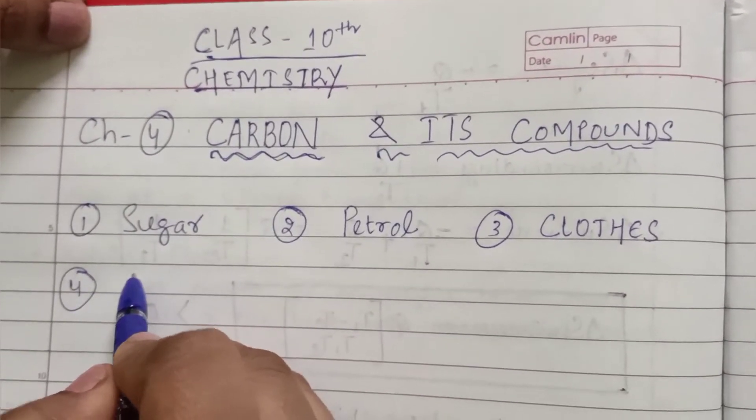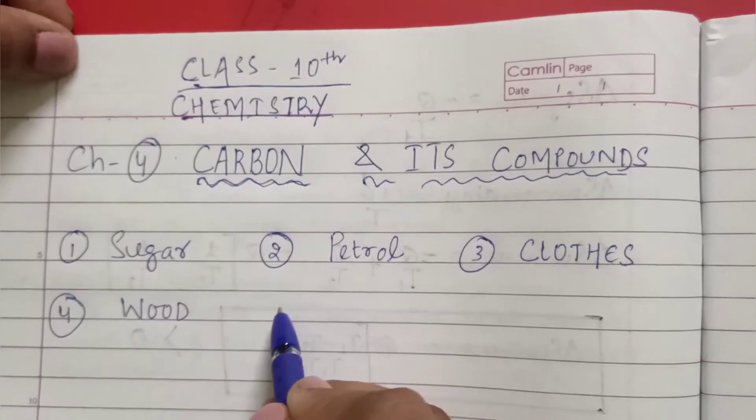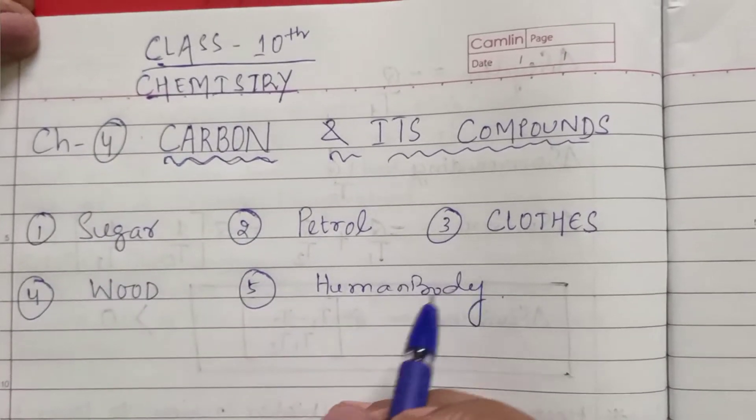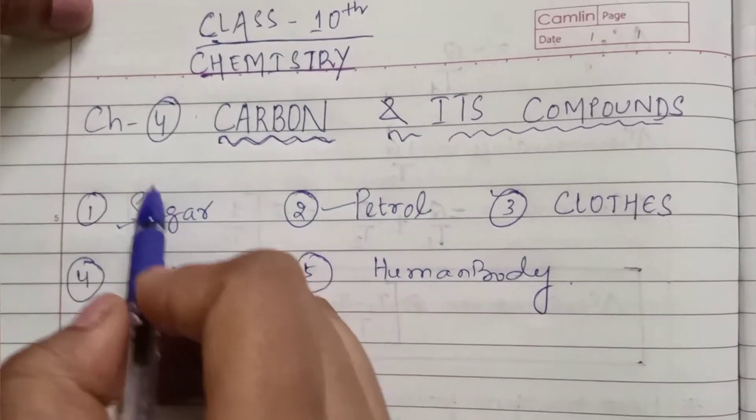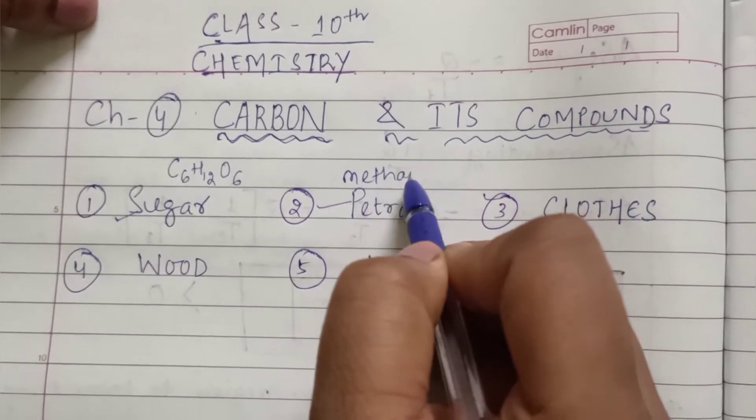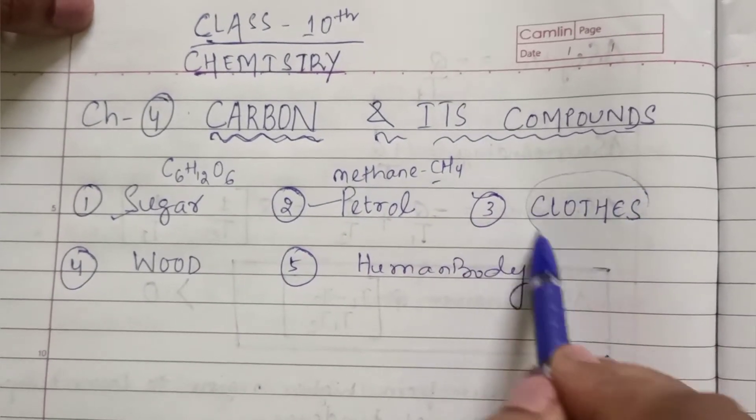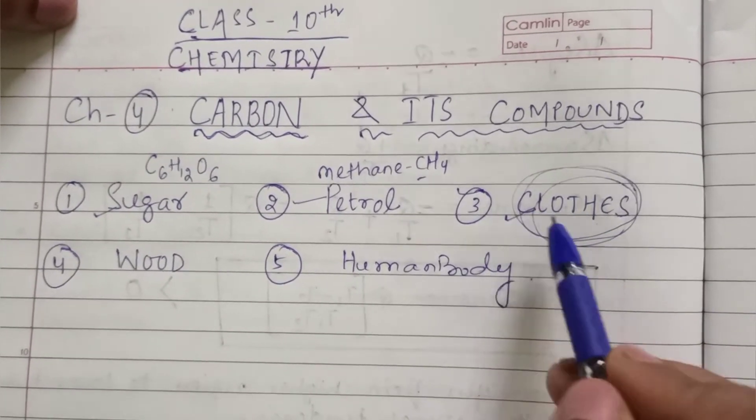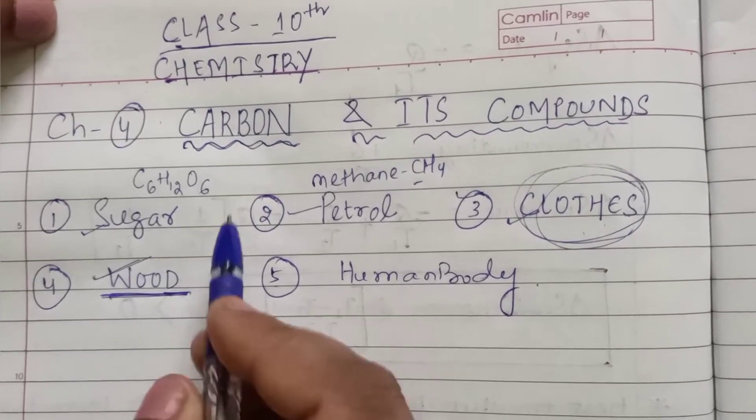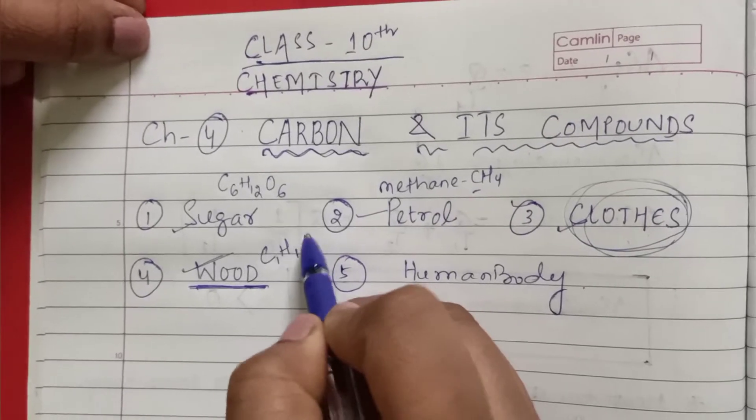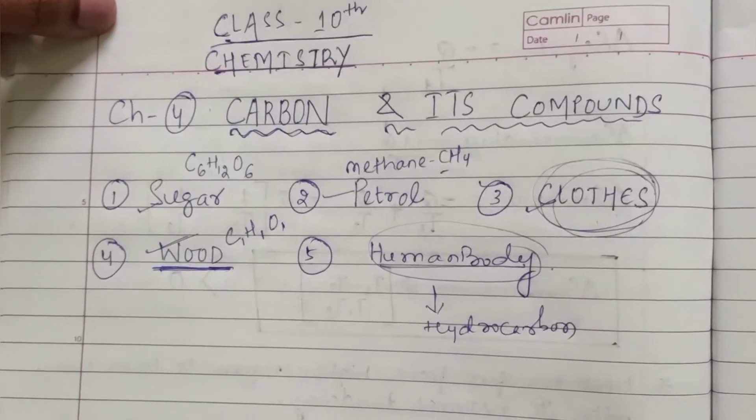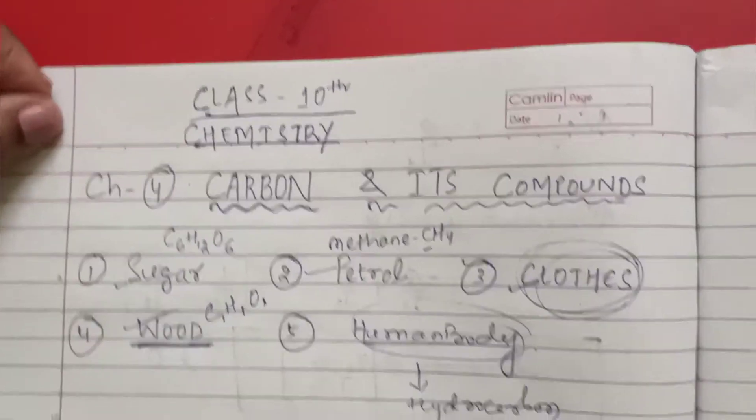Number four, we go to school and sit on tables and chairs that are made up of wood. Number five, we ourselves - the human body. All the substances I have written as examples contain carbon in them. For example, sugar is made up of carbon, like C6H12O6. In the same way, petrol contains methane and its formula is CH4, which contains carbon. The fibers which are converted into fabric used to make clothes consist of carbon. Wood also contains carbon. Human bodies are considered as hydrocarbon bodies.